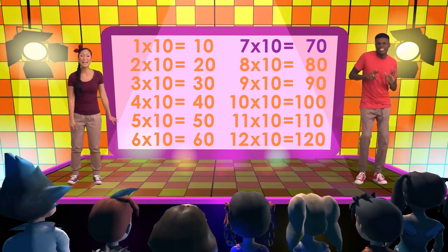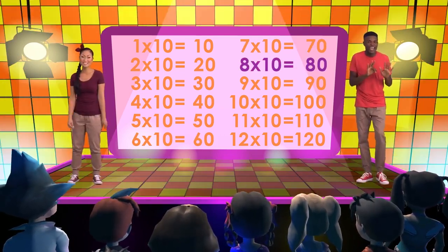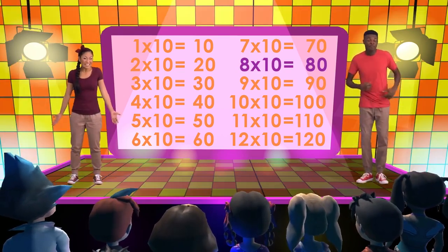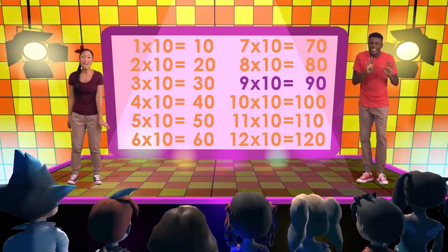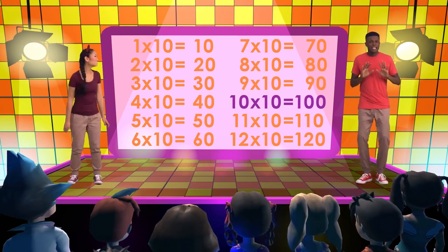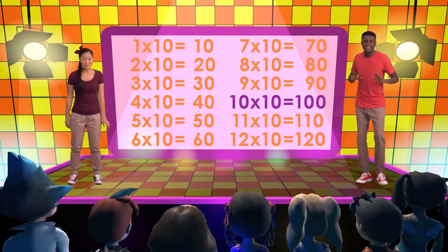7x10 is 70. 8x10 is 80. 9x10 is 90. And 10x10 is 100.